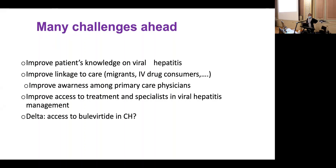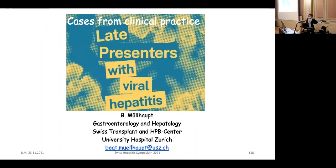In clinical practice, it is unfortunately regular to see advanced, late-presenter cases. Key points include improving patient knowledge of viral hepatitis — some patients have known for many years and are not seeking treatment due to lack of symptoms. We must improve linkage to care, notably for heavy drug users and migrants, as in the first case. Awareness among primary care physicians needs improvement, as does access to treatment cascades for viral hepatitis and, in particular, for delta, where many challenges remain.